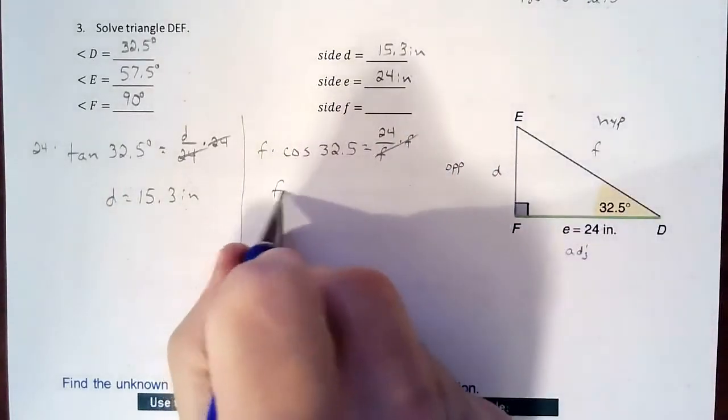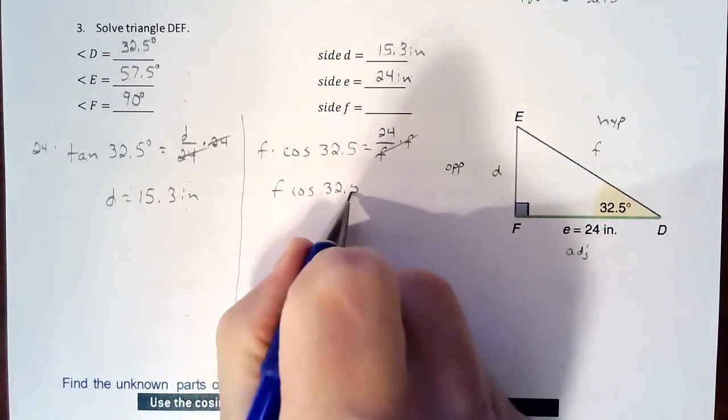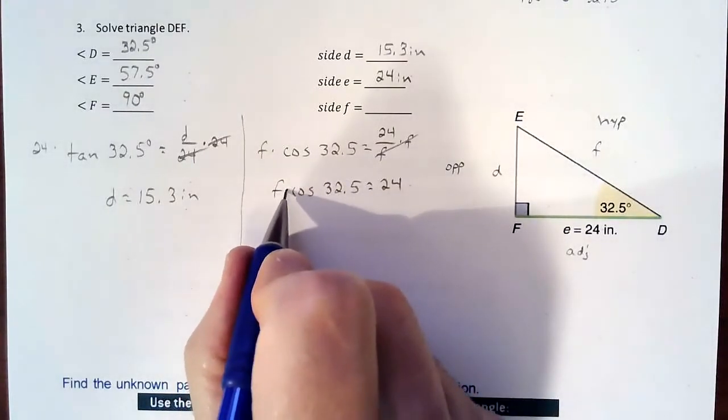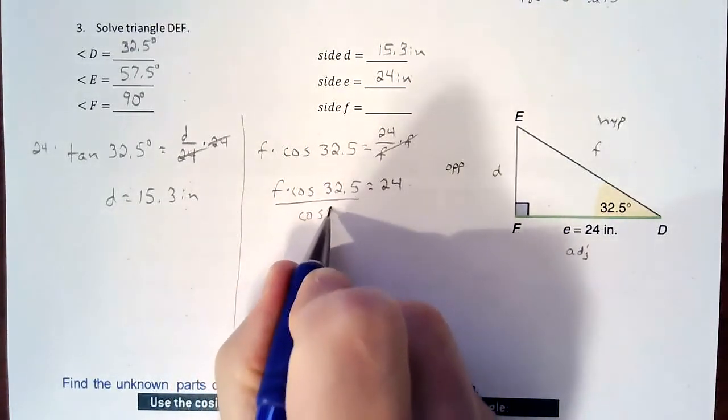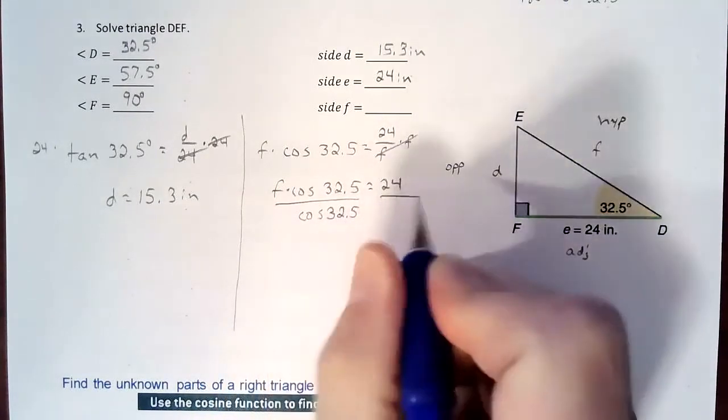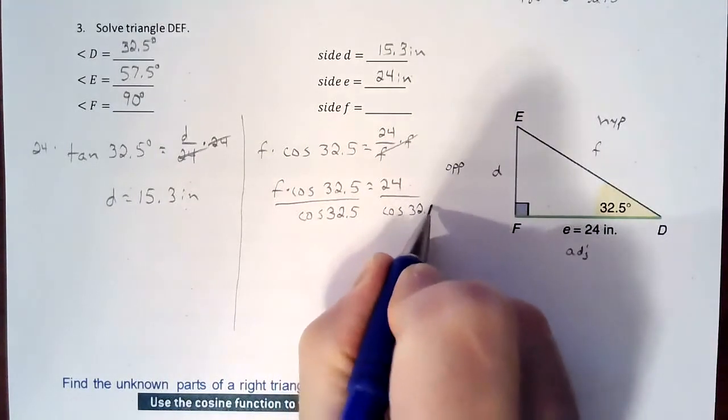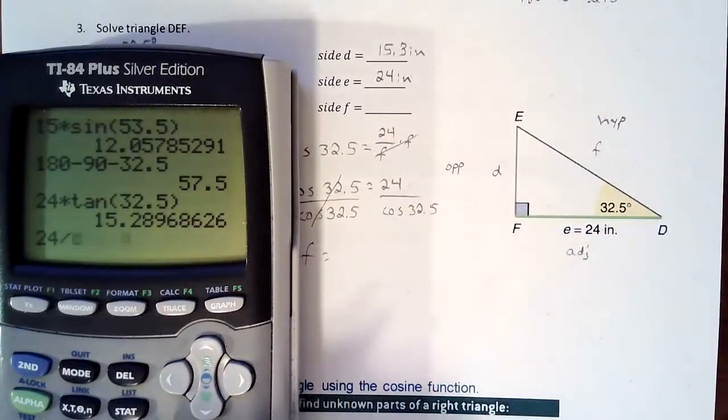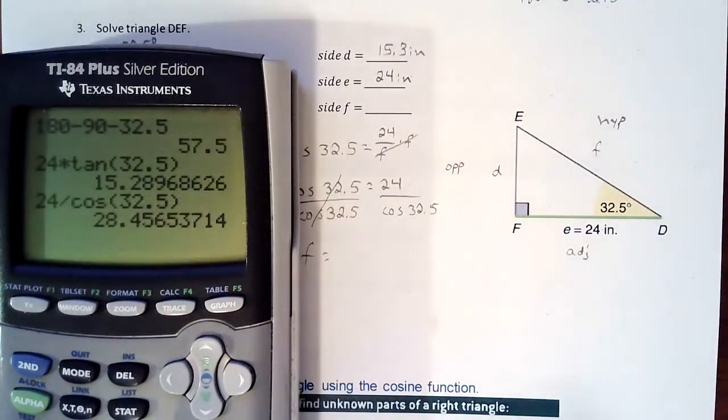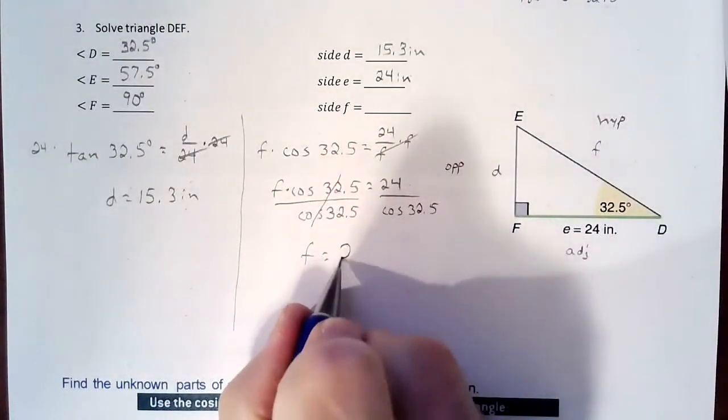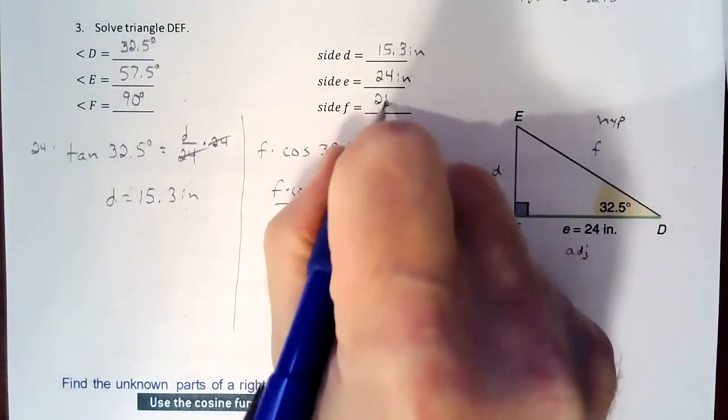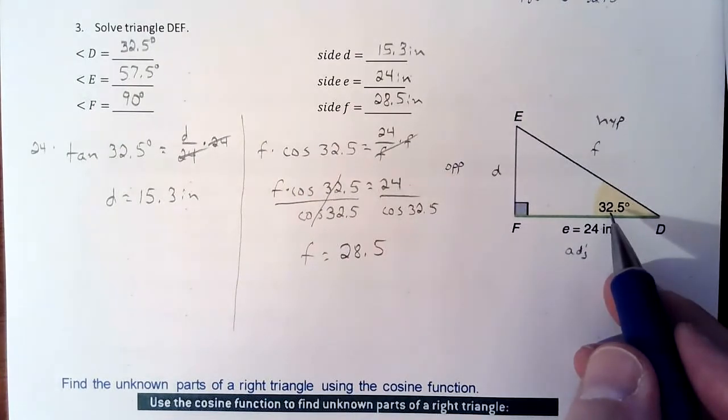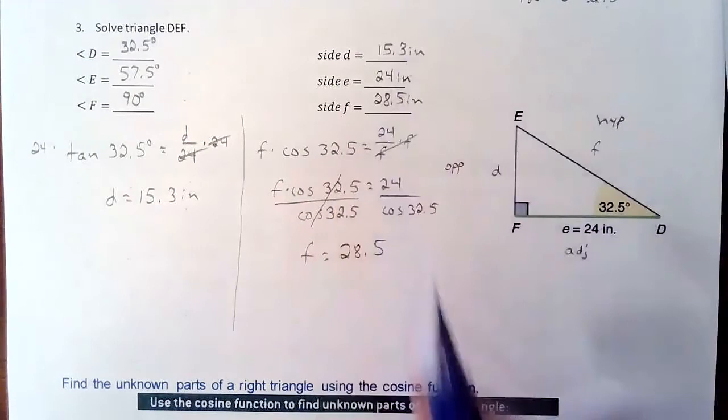So that clears that out. So now we have F times cosine of 32.5 equals 24. Cosine of 32.5 is just some decimal, so it's something multiplied to F. If I want to undo multiplication, I'm going to have to do division to undo it. So I'm going to divide by cosine of 32.5 on both sides. So it cancels on that side. F is going to equal whatever that turns out to be. So we're going to take 24 divided by cosine of 32.5 and get 28.5. And then a quick spot check is F should be the biggest because it's across from the biggest angle. 32.5 is the smallest angle, and it should be across from the smallest side. So D should be the smallest. So that checks out. So most likely we did the math correctly.